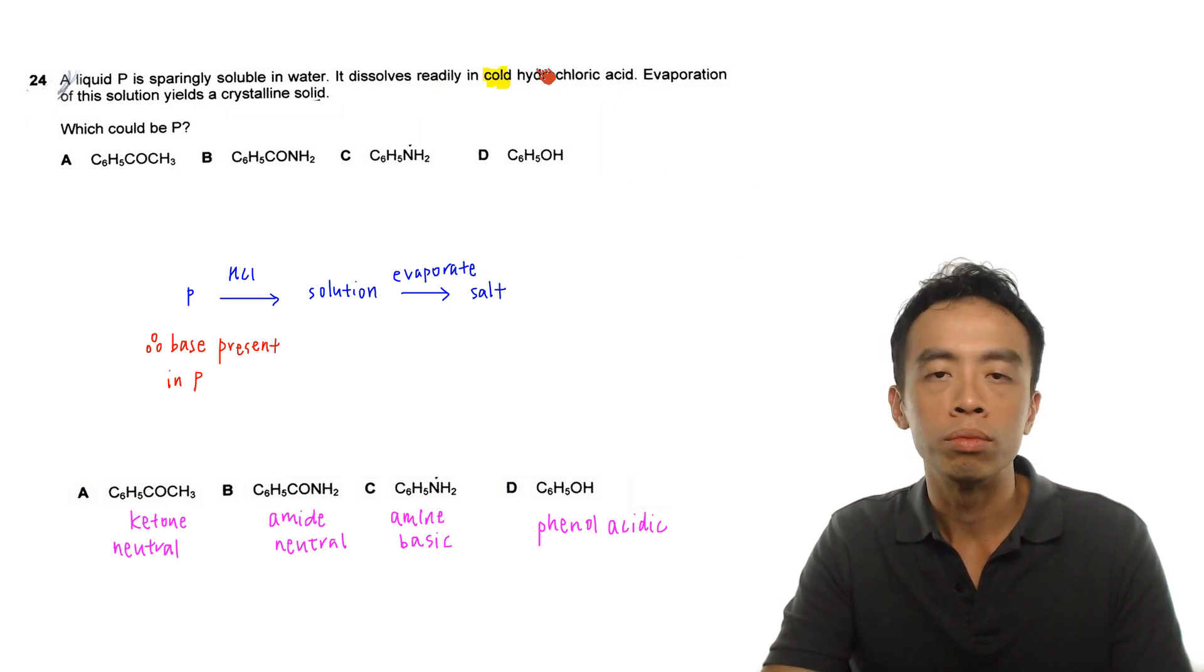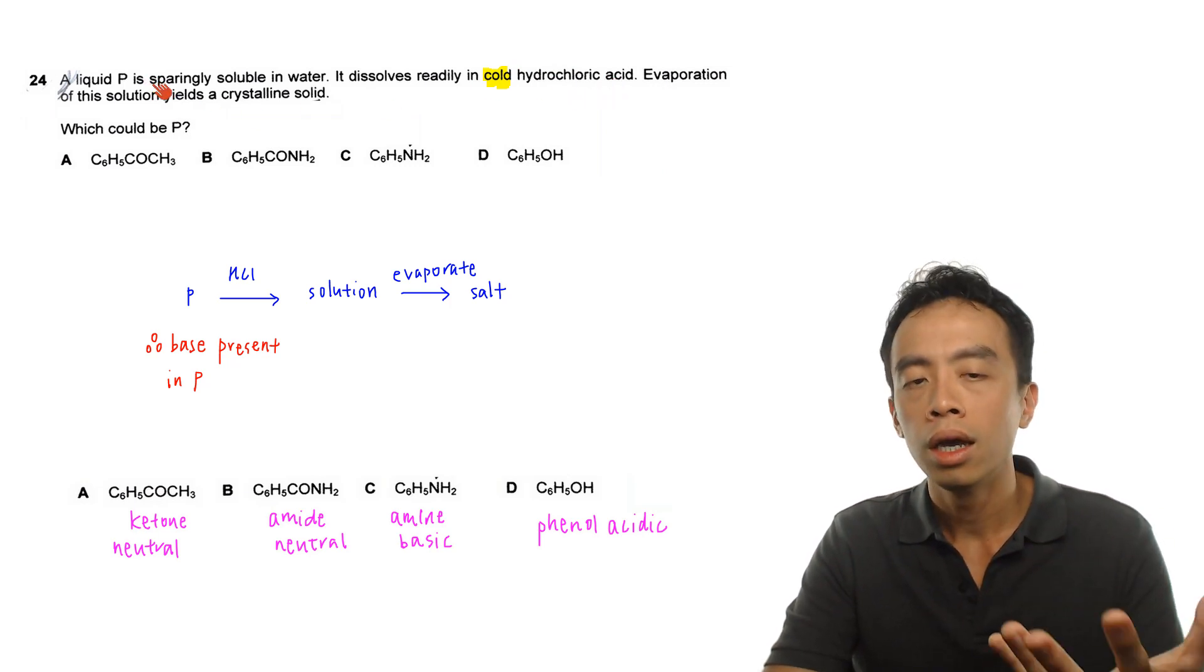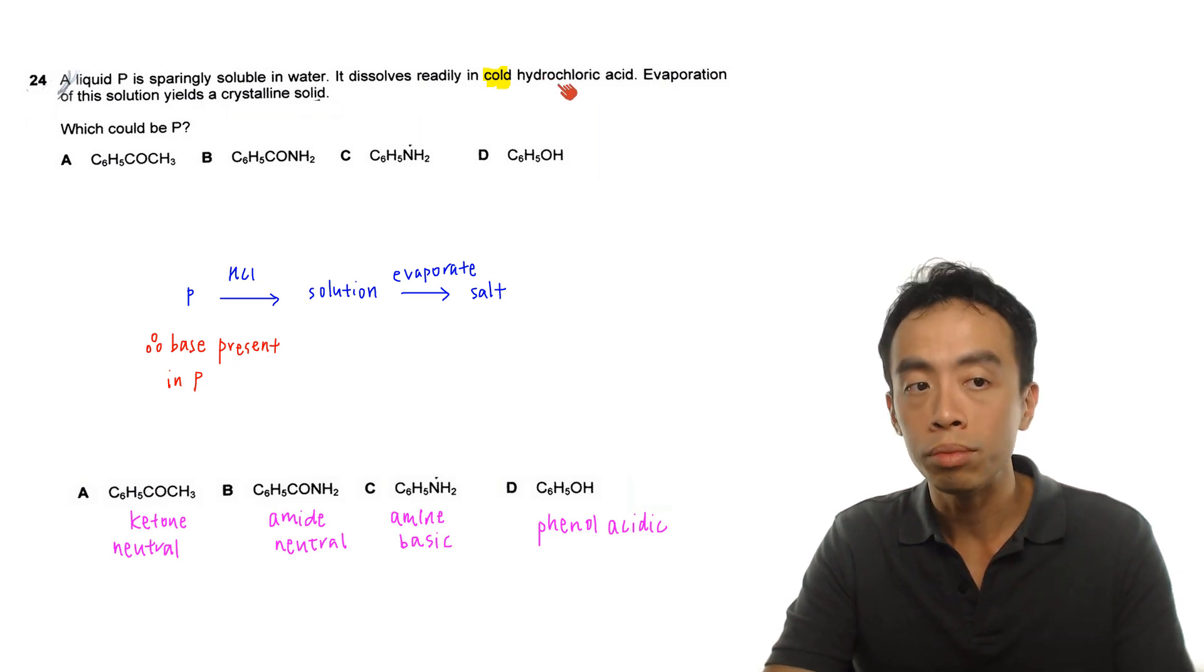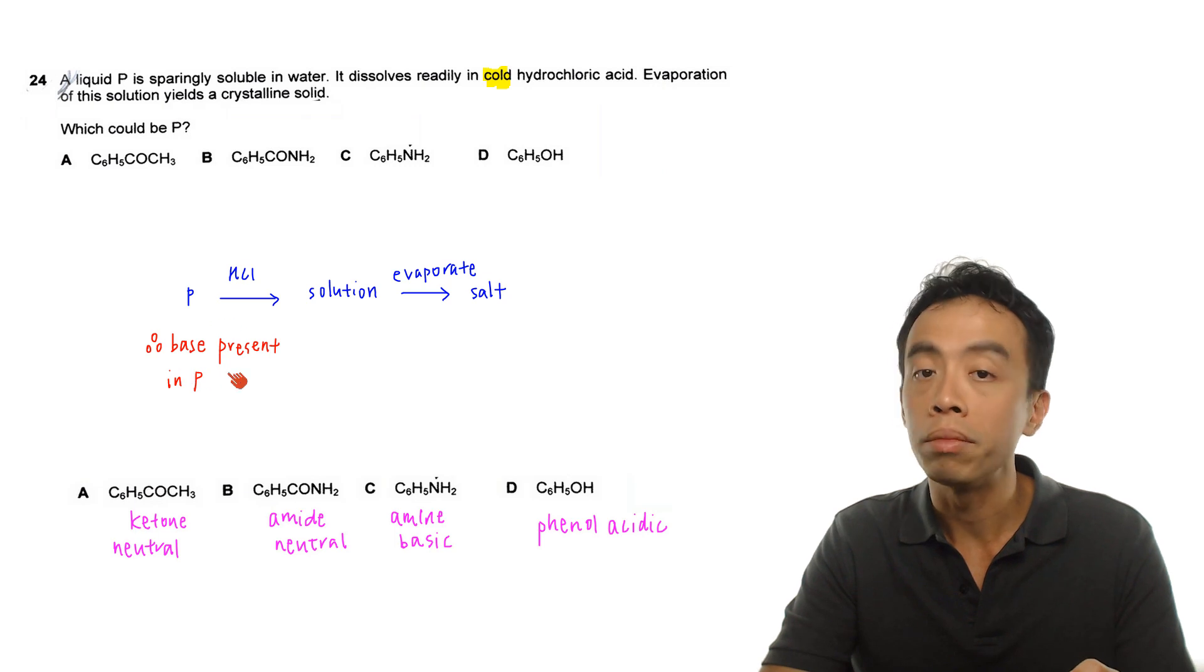Now if the question mentions cold condition, then this will have to be an acid-base reaction. So what this means is inside P, there's something that can react with HCl involving acid-base reaction. So I must have a base functional group present in P. P will undergo acid-base reaction with HCl to form a solution, which is a salt.